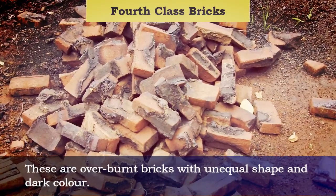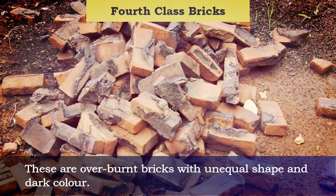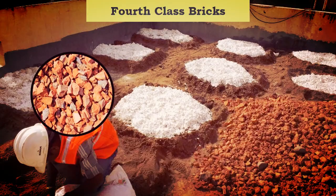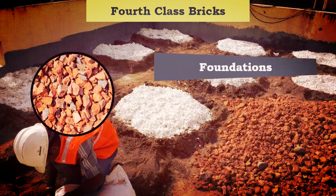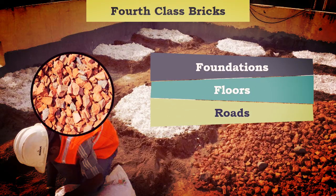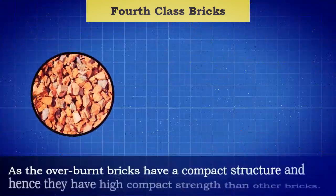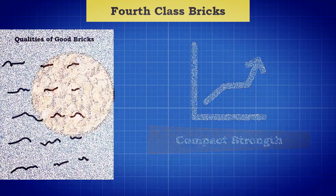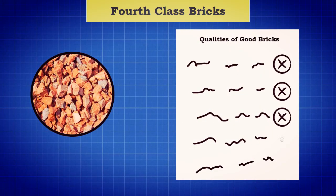Fourth-class bricks are overburnt bricks with unequal shape and dark color. These bricks can be used as aggregate for concrete in foundations, floors, roads, etc. As overburnt bricks have a compact structure, they have higher compressive strength than other bricks, but cannot be used for normal brickwork as they do not comply with the qualities of good bricks.